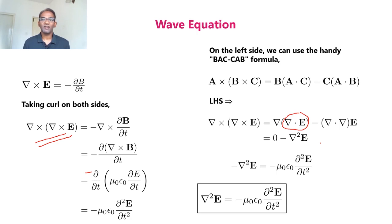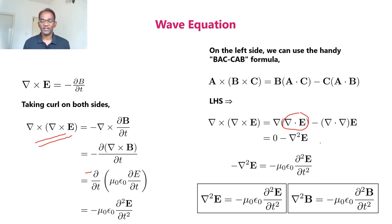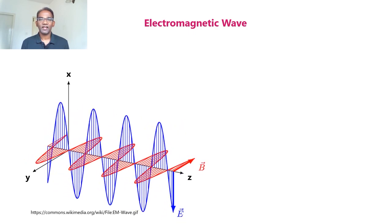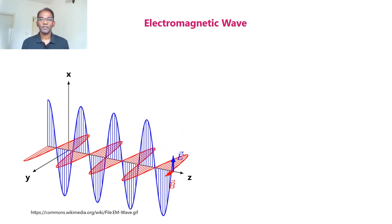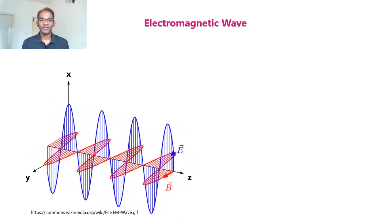If we start from the curl for the magnetic field — del cross B equal to mu zero epsilon zero ∂E/∂t — we can similarly arrive at del² B equal to mu zero epsilon zero ∂²B/∂t². These are the wave equations in terms of electric and magnetic fields. Maxwell predicted that electric and magnetic fields are mutually perpendicular and also perpendicular to the direction of propagation.